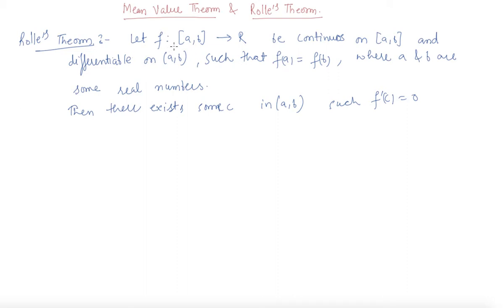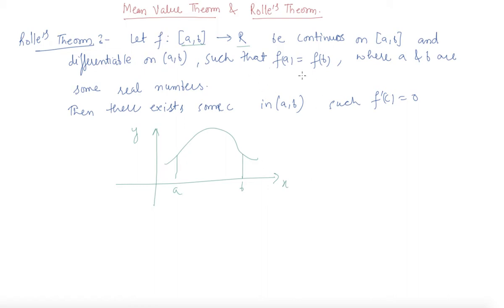What this theorem says is that there is a function defined on [a, b] for all real values, continuous on [a, b]. Let me draw this function. Let it be the function defined on a to b — this is a, this is b, this is your x-axis, this is your y-axis. The function is defined on [a, b] such that f(a) equals f(b). What it states is that there exists some c at which f'(c) will be 0, meaning the slope should be 0.